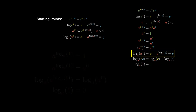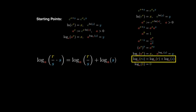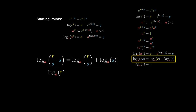Consider now the expression logarithm base a of r over s times s. This is the logarithm of a product, and we know that the logarithm of a product equals the sum of two logarithms. However, by algebra, the left-hand side simplifies to the logarithm of r. Subtracting the logarithm of s on both sides, we obtain that the logarithm of a quotient is the difference of logarithms.